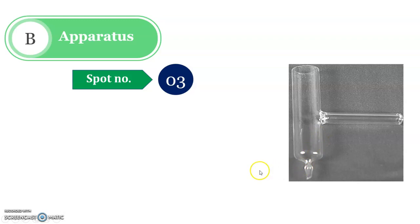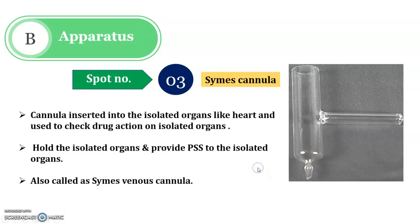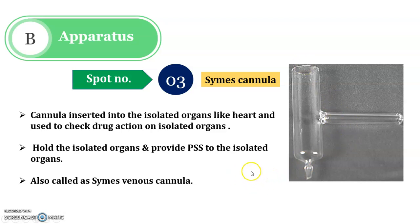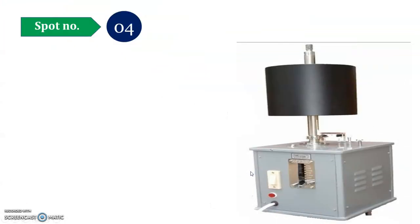Now let us discuss spot number three. This is the Simus Cannula, generally used to check drug action on isolated organs like the heart or tissues. It is helpful to hold the isolated organs and it provides PSS — that is, physiological salt solution. It is also called the Sinus Venosus Cannula, so remember this spot is the Simus Cannula or Sinus Venosus Cannula.